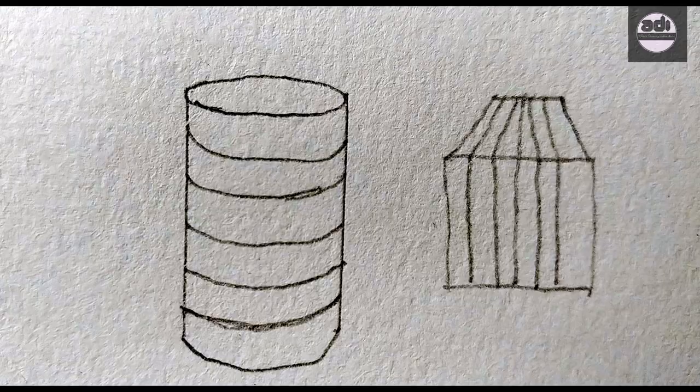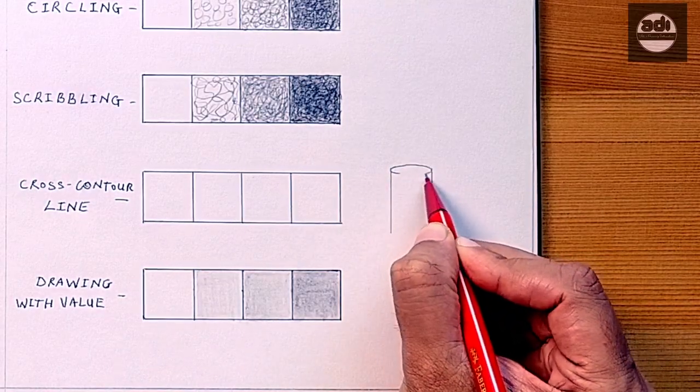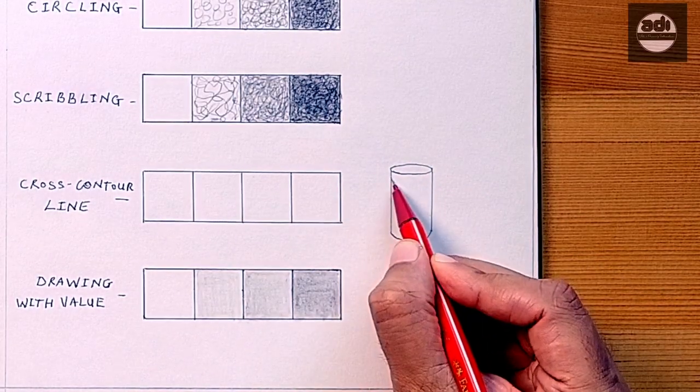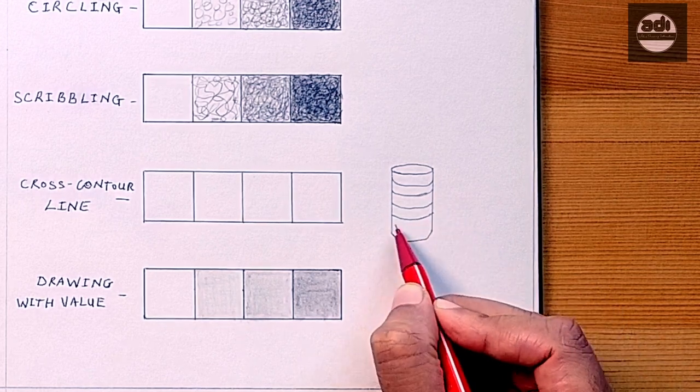A cross contour line is one that goes across the form and helps describe it. The line can have variations in thickness, weight, value, and quality.